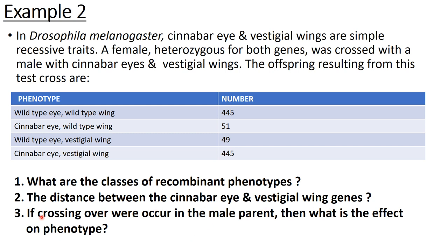Third question is: if crossing over were occurring in the male parent, then what is the effect on phenotype? The result will be same. Because the things are same. Whether male or female doesn't matter. The genotypes, the genes are playing the main role. So the result will be same.